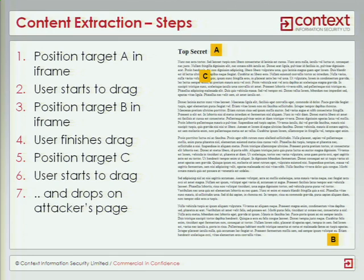So then the user finishes that drag, and then we need to get the user to drag again. In this case, we would target position C. At this point, all the text on the page would be selected. Then we get the user to drag again — this would be moving a puzzle piece for the second time — and it would drag the content from the iframe and drop it onto the attacker's page. I'm going to show you an example of this at the end to see exactly how that works.